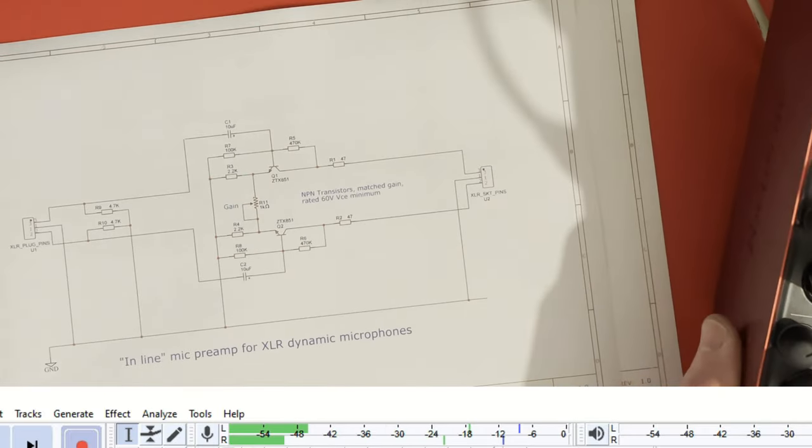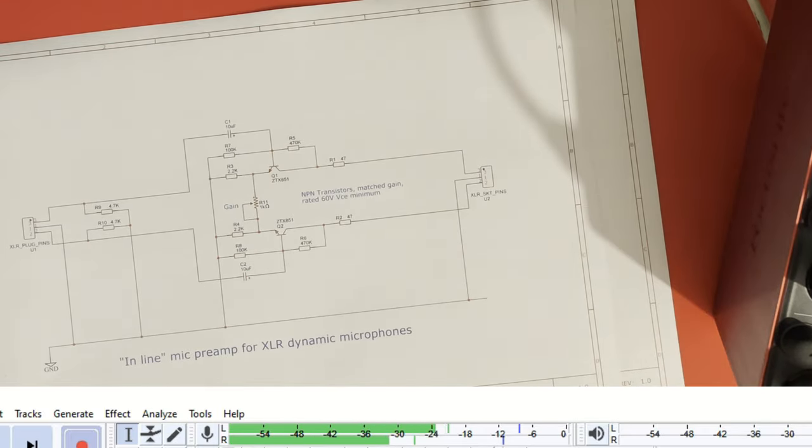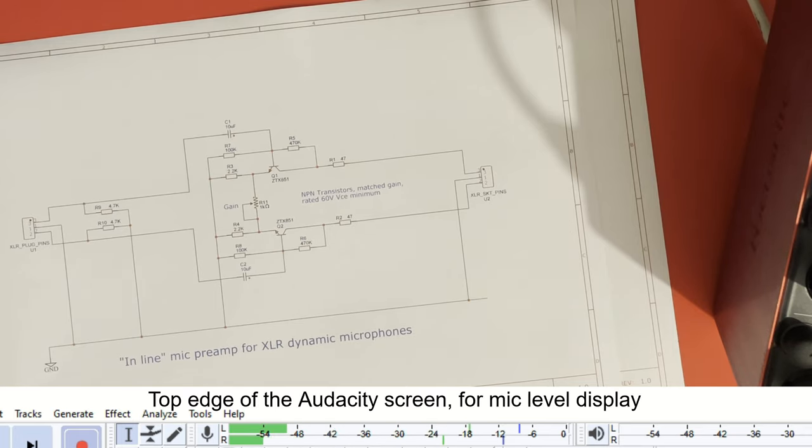And as you can see from the Audacity level meters, they're peaking at about minus 18 for the SM58 and about minus 24 for the SM7B. There's about 6 dB difference.